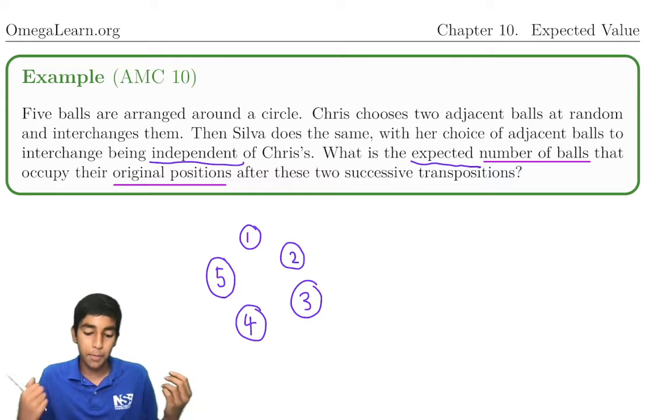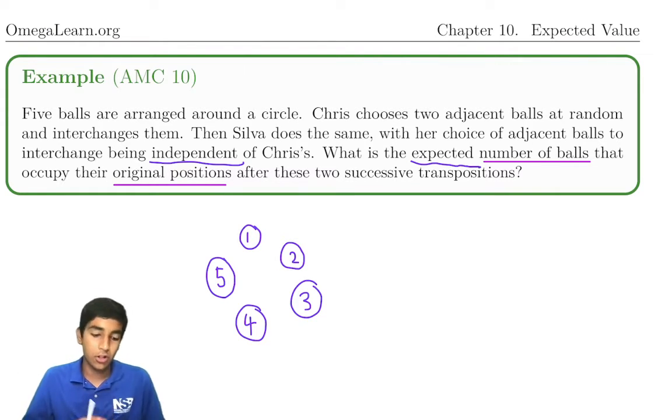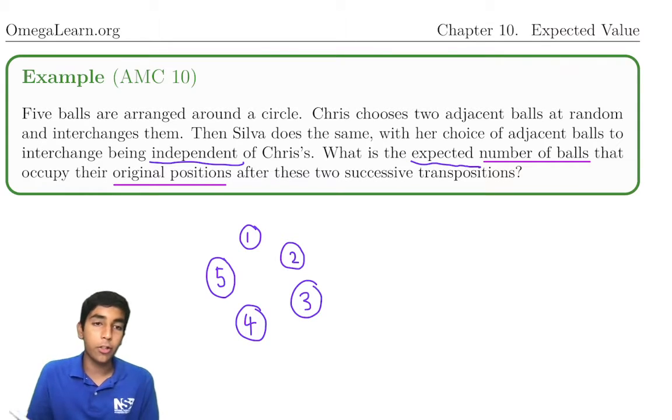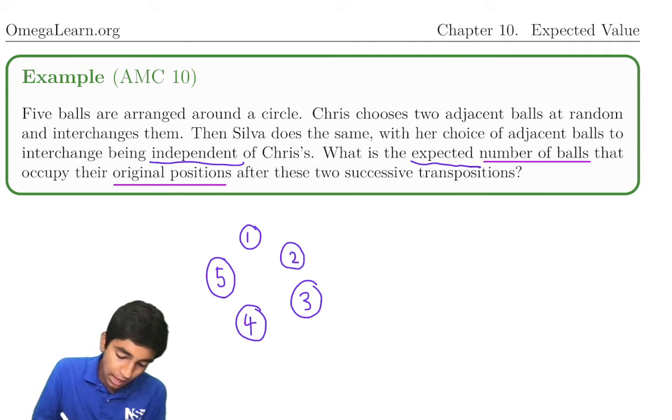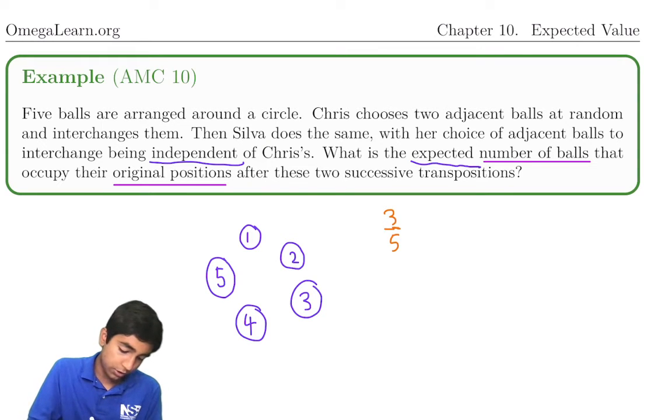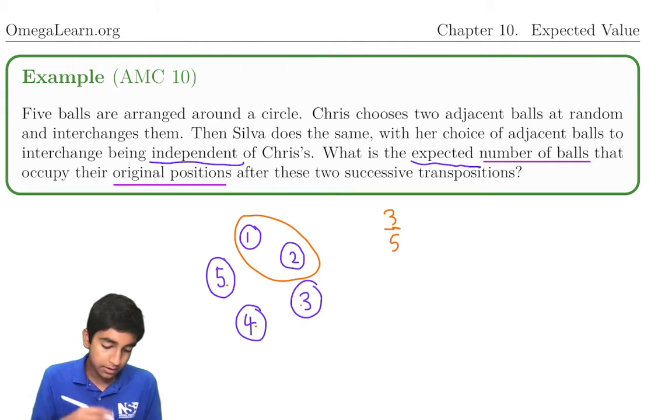Well, first of all, what's the probability it won't be selected for any of the transpositions? Chris chooses two balls. So three-fifths of the time, a ball won't be chosen for a transposition. Let's say he flips one and two, for example. Then three-fifths of the time, it won't change. Now Silva does the same.